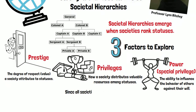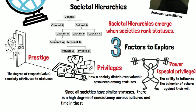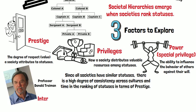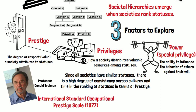Since all societies have similar statuses, there is a high degree of consistency across cultures and time in the ranking of statuses in terms of prestige. We can look at the work of Professor Donald Treiman, who developed the International Standard Occupational Prestige Scale in 1977.